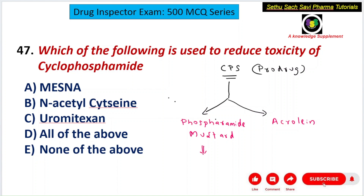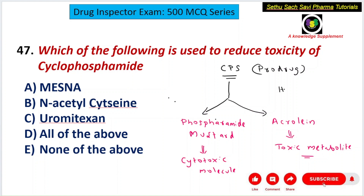Phosphoramide mustard is the cytotoxic molecule — the cancer cell-killing agent — whereas acrolein is the toxic metabolite. Acrolein creates a toxicity called hemorrhagic cystitis, which is inflammation of the urinary bladder and can lead to fibrosis of the urinary bladder.